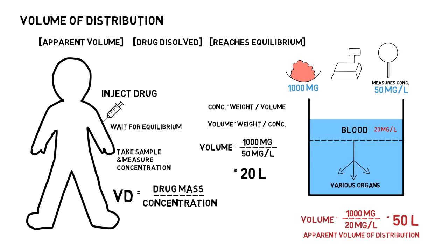This is known as apparent volume of distribution and it's a very important concept. Because drugs move away from the blood into various organ systems, you tend to estimate a higher volume of distribution as the concentration in the blood goes down. Higher volume of distribution means more drug is leaving from the blood into various organ systems. Lesser volume of distribution means more drug stays within the vascular space and does not go effectively into various organ systems. We will talk more about this when we discuss protein binding and how it can affect the volume of distribution.